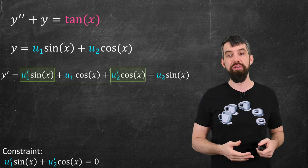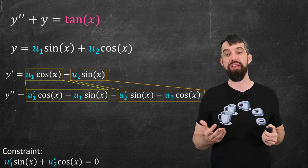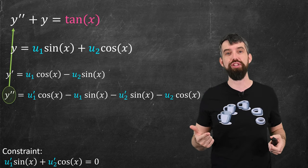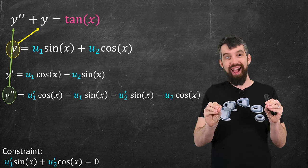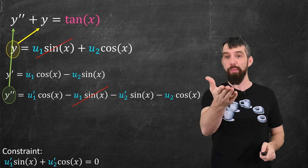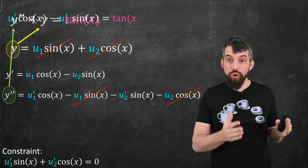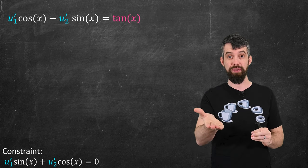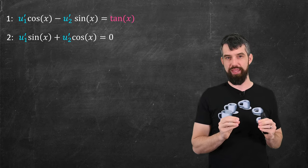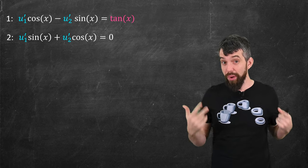With this condition set equal to zero, I get rid of those two terms. Taking the second derivative gives two more product rules and a gnarly second derivative. I plug y'' and y into the original equation, and notice a lot of similar terms cancel — positive u1·sin(x) in y cancels with the negative of that term in y''. Likewise for u2·cos(x). Only two terms remain on the left-hand side: u1'·cos(x) minus u2'·sin(x), all equal to tan(x). This is one condition. The other is the constraint I imposed: u1'·sin(x) plus u2'·cos(x) equals zero. I now have a system of two equations in two unknowns: u1' and u2'.